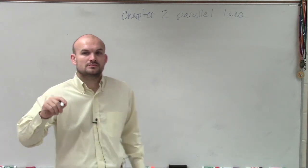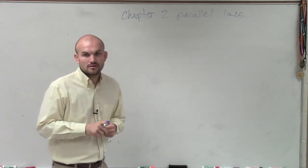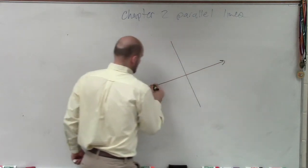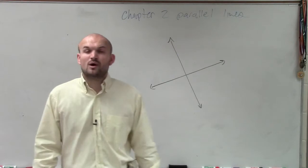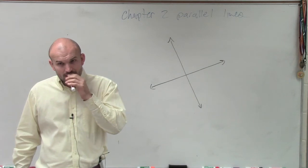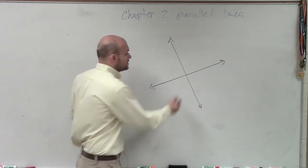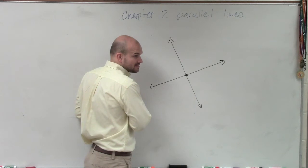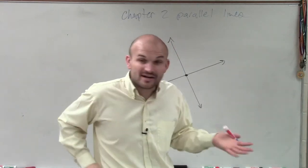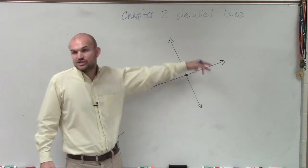Do you have your notes written down there? So what did we say about vertical angles? We have two lines intersecting, right? They share a common vertex and they don't share any sides. So ladies and gentlemen, if you didn't write that down in your notes, write that down. Vertical angles are formed by intersecting lines — they have a common vertex but they share no sides.